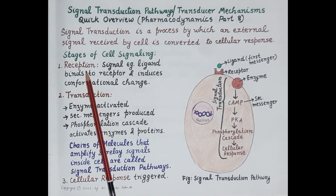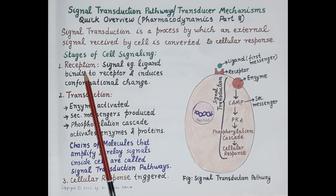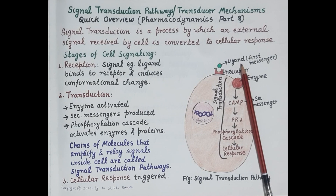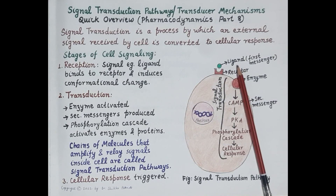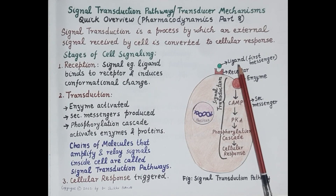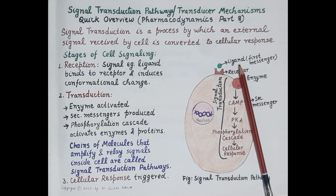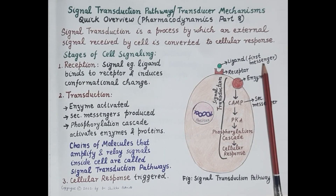First is reception, whereby the target cell receives the signal. The signal is mostly chemical, in the form of a ligand — for example, a hormone like insulin, a neurotransmitter like acetylcholine or adrenaline, or an autocoid like histamine.